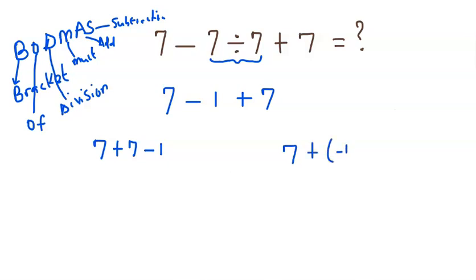Now let us see whether we get the same answer. 7 plus 7 is 14, minus 1, we get 13, which means 13 is the correct answer.